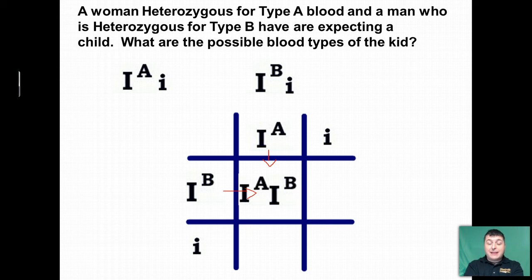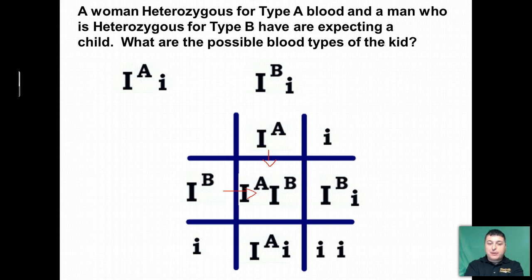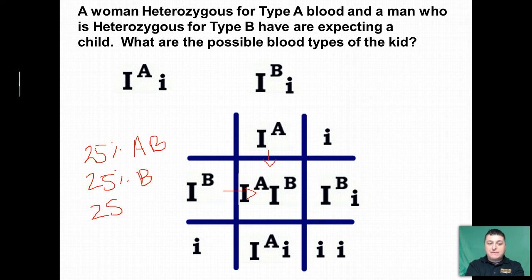The first offspring has an A allele and a B allele, meaning they're going to have AB blood. The next offspring has a B allele and an O allele, which means they have B blood. The next offspring would have an A allele and an O allele, giving them A blood. And the last possible offspring would have two O alleles, meaning they'd have O blood type. So there's a 25% chance of AB, 25% B, 25% A, and 25% O — these parents have the chances of having children of any blood type.